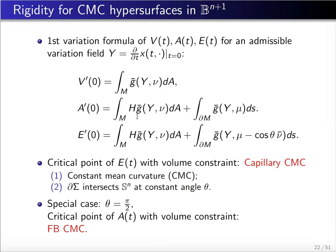When you split into the tangential part and the orthogonal part, the tangential part gives, by using Stokes' theorem, the boundary term. The orthonormal part gives the mean curvature term. Here mu is the conormal of the hypersurface at the boundary.